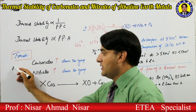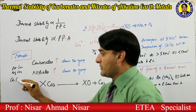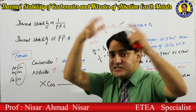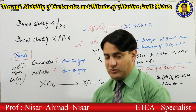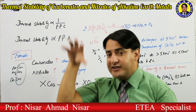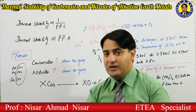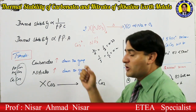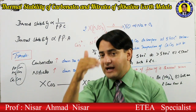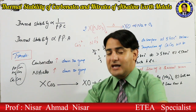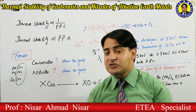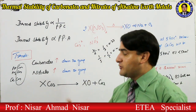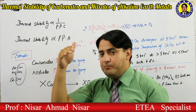Let's start with beryllium carbonate, then magnesium carbonate, calcium carbonate — going down the group. As we go down the group in alkaline earth metals, the size of the cation increases. Increasing size means decreasing charge density, decreasing charge density means decreasing polarizing power, and decreasing polarizing power of the cation means increasing thermal stability. So carbonate thermal stability increases down the group.